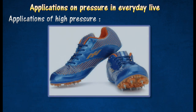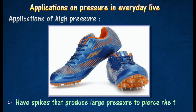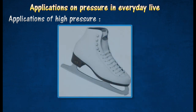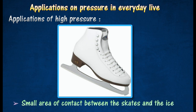Spiked running shoes can provide a better grip for athletes running on a track, because these shoes have spikes that produce large pressure to pierce the track. Ice skates are designed to have a small area of contact between the skates and the ice. While skating, the weight of the skater produces a large pressure on the ice and melts it, thus enabling the skates to slide easily over a thin film of water.